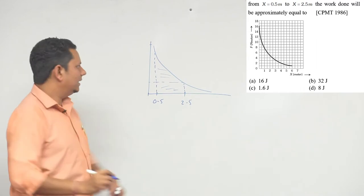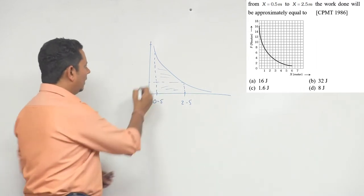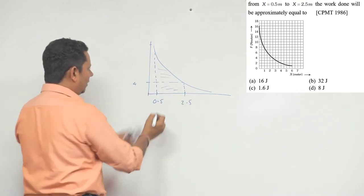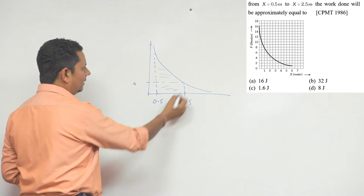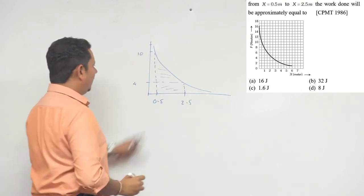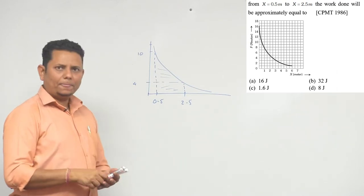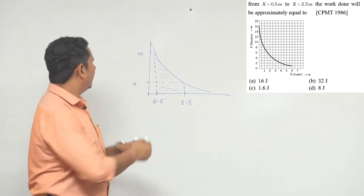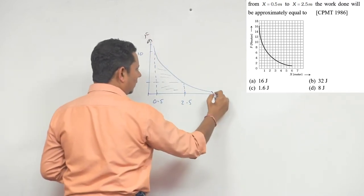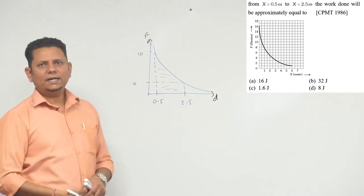We can see from the data that we're going from 0.5 to 2.5. So if we have a trapezium area here, we will divide it into two parts.